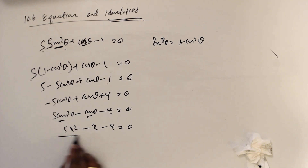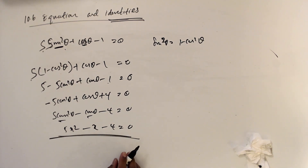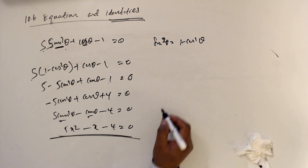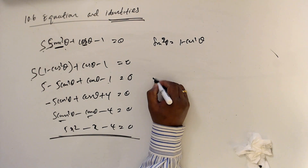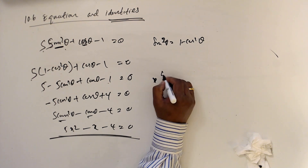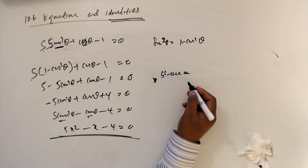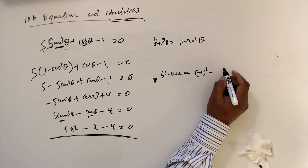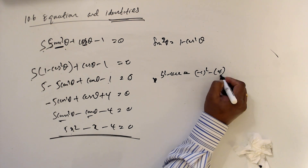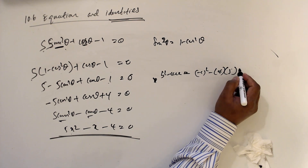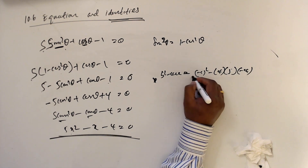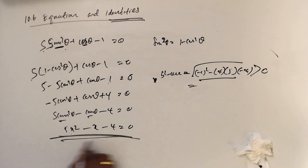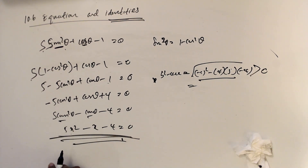I'm not sure we can find a solution for this one, but usually you can. Let's check using the discriminant: b squared minus 4ac. Here b squared is minus 1 squared, minus 4 times 5 times minus 4. This gives a positive answer, so yes, a solution can be found.